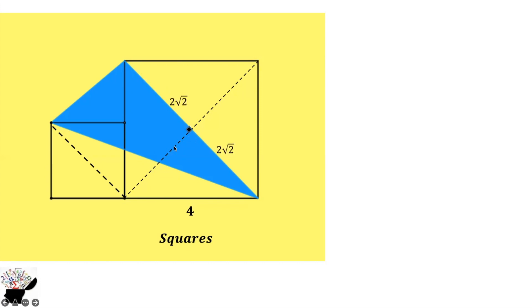We can use Pythagoras to find out the length of the diagonal, which would be 4√2. When we divide it into 2, we have 2√2, 2√2, 2√2.